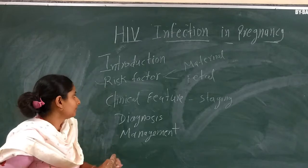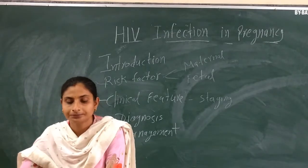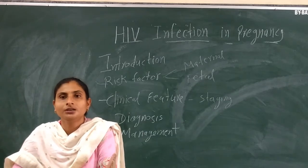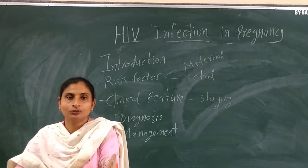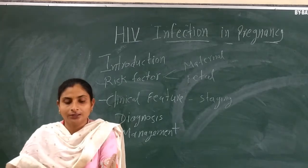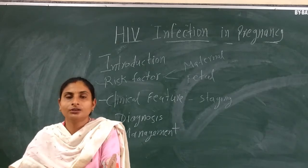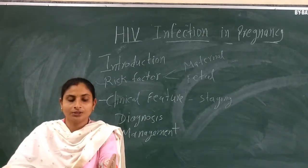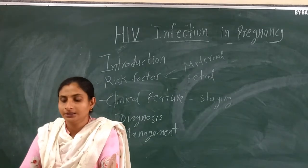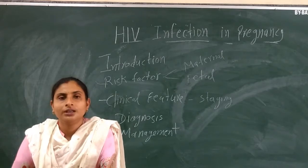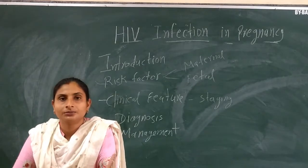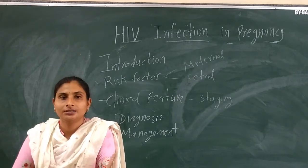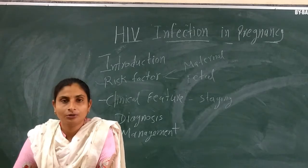What are the clinical features? In primary HIV infection, the patient may be asymptomatic. If a primary infection develops into disease, symptoms may or may not appear — some patients remain asymptomatic for a period.